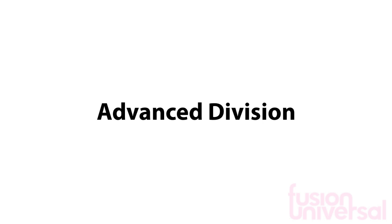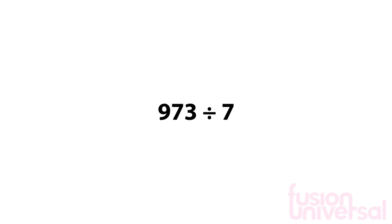You have learned what division is. Now let's look at a harder example and a new method. Let's look at 973 divided by 7.